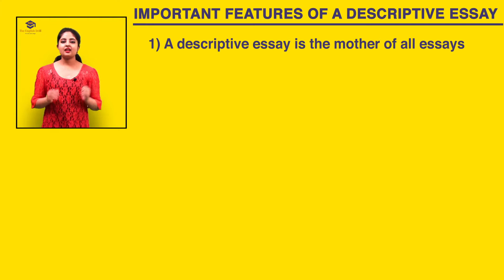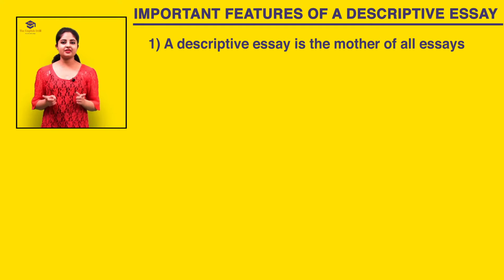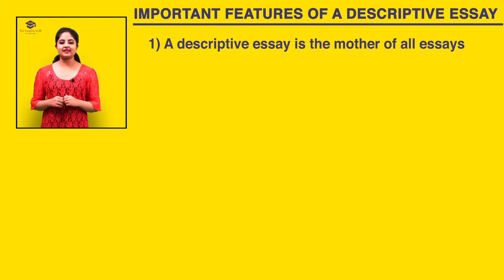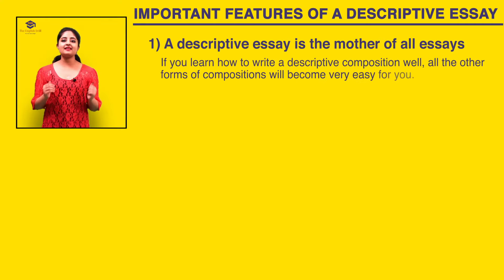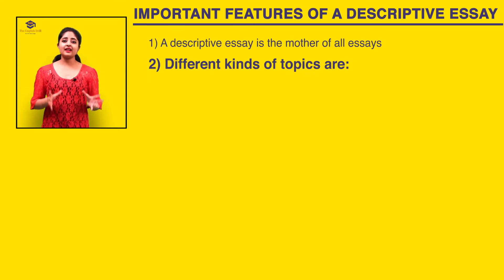Composition or essay writing usually starts with descriptive composition. When you were in class one or two in your junior years, you remember the essay topics you'd be given — for example, write an essay on your best friend, your pet dog, your favorite food, your favorite festival, a cow, the Taj Mahal, and so on. All of these were descriptive essays. So if you learn how to write a descriptive composition well, all other forms of composition will become very easy for you. It is extremely important to learn how to nail a descriptive composition.